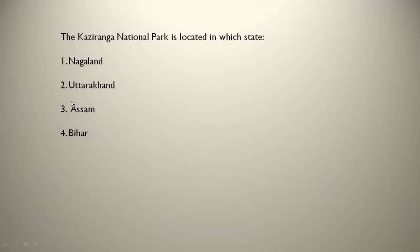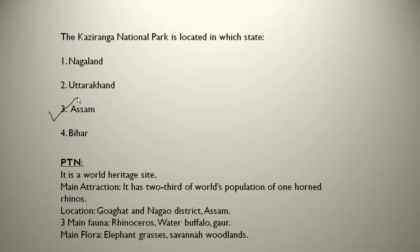The Kaziranga National Park is located in which state? It is in Assam. It is also a UNESCO World Heritage Site. The main attraction, and a very important point, is that it has two-thirds of the world's population of one-horned rhinoceros. Of all the one-horned rhinos in the world, two-thirds are in India's Kaziranga National Park. Its location is in the Golaghat and Nagaon districts of Assam. The main fauna are one-horned rhinos, water buffalo, and gaurs. The main flora are elephant grasses and savannah woodlands.